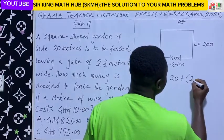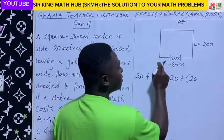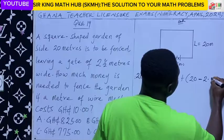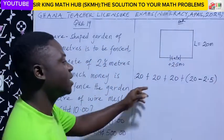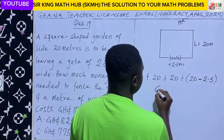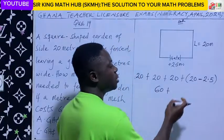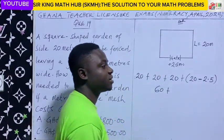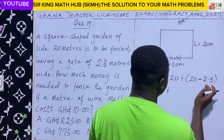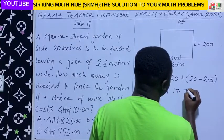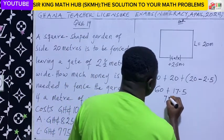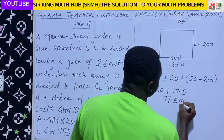The full length of the fourth side measures 20 meters, but we have to exclude the width of the gate, which measures 2.5 meters. So: 20 + 20 + 20 = 60 meters, plus 20 minus 2.5 = 17.5 meters. Therefore, 60 + 17.5 = 77.5 meters total.